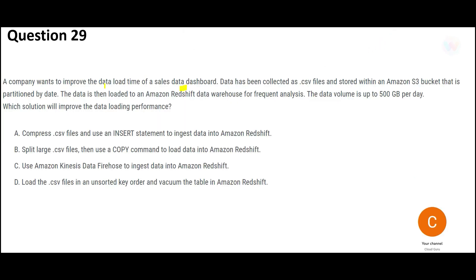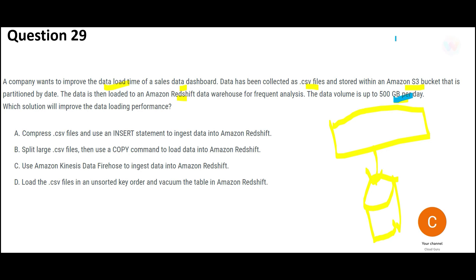There is a sales dashboard and you want to improve its data load time. The data is collected as CSV files, stored on S3 buckets, and then loaded to Redshift. The dashboard reads data from Redshift — about 500 GB per day — and with such data volumes, performance degrades. The question asks how to improve this performance.